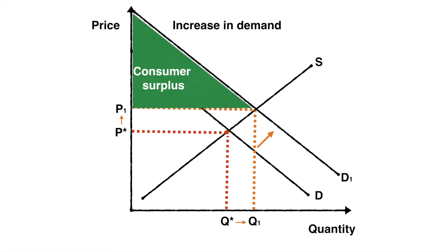Although it has not been graphed here, you should be able to determine the change in producer surplus as well. While the original producer surplus was the area below P star and above S, it is now the area below P1 and above S, demonstrating an increase.